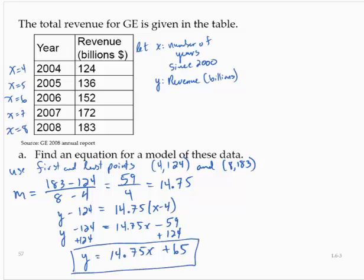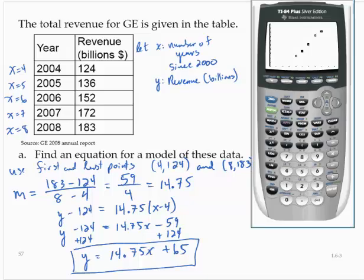Now, let's go ahead and double check that. Let's see if that's a reasonable model by graphing it on our y equal screen. So let's graph it along with the data. And I missed the plus sign there. 14.75x plus 65. Let's graph. So that looks like a reasonable model for the data.